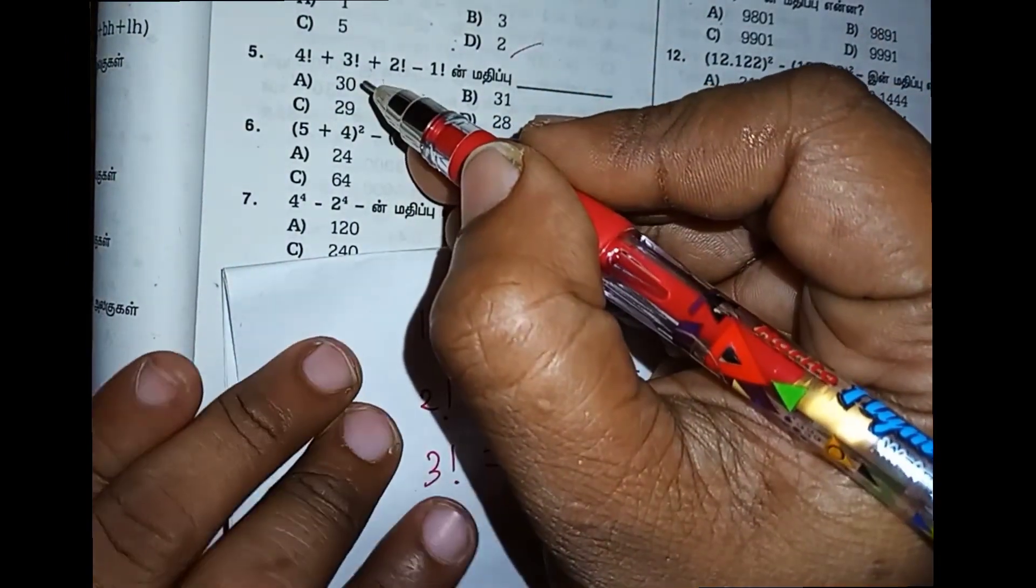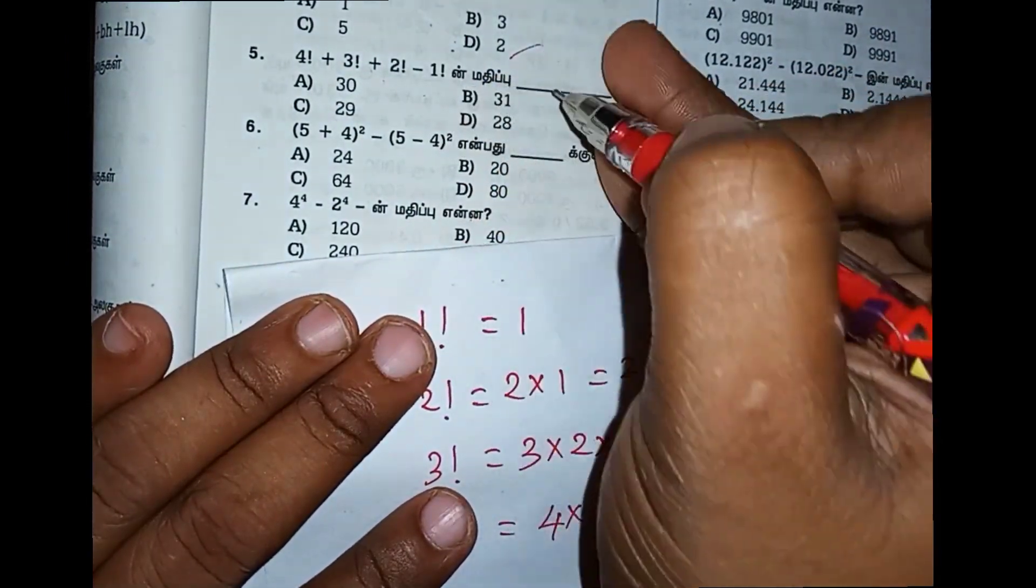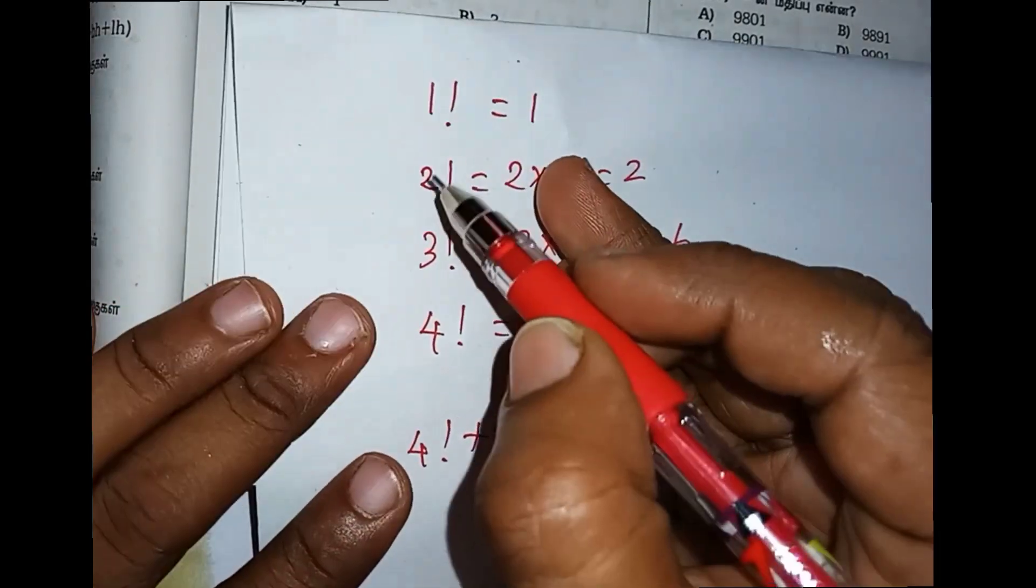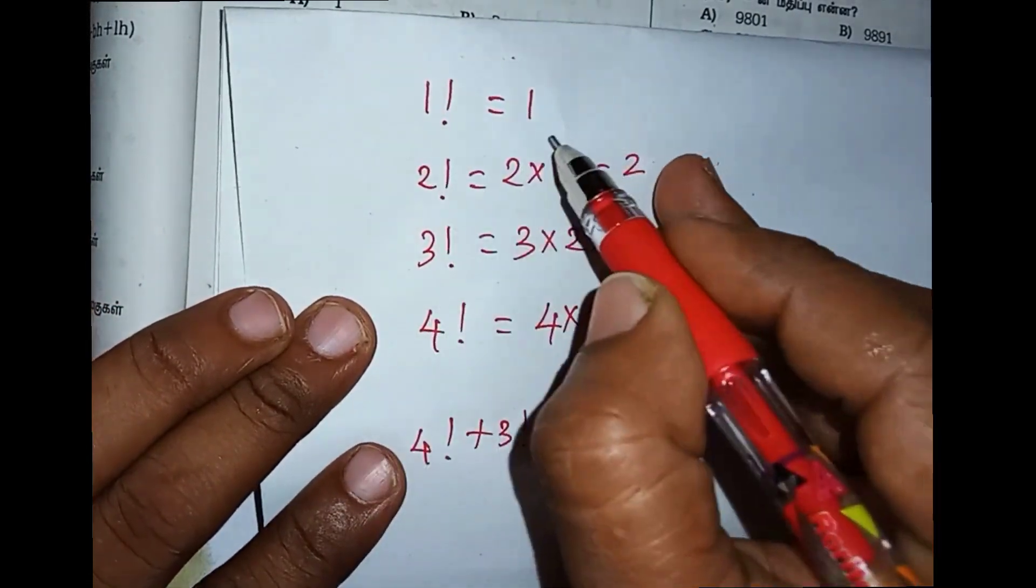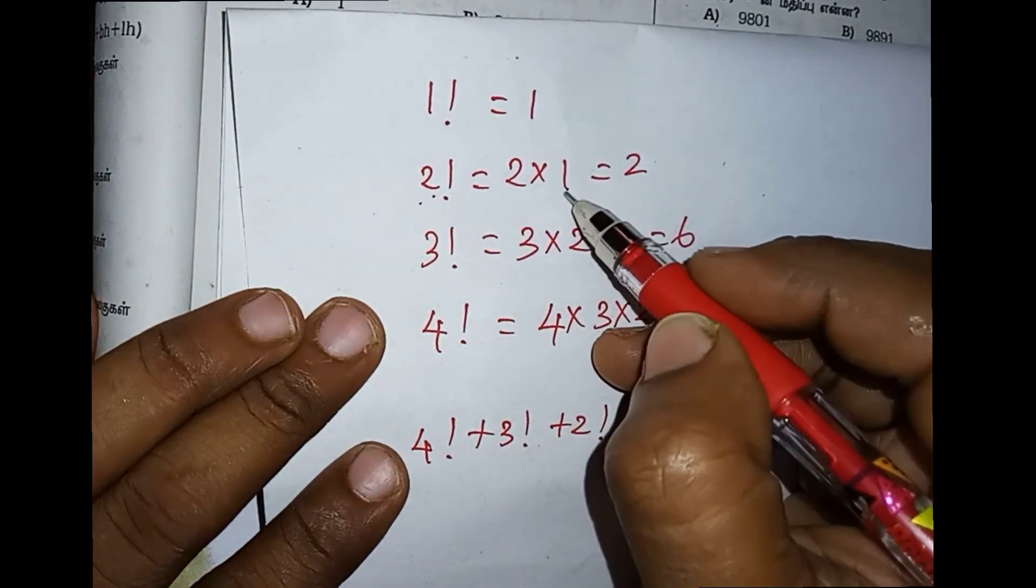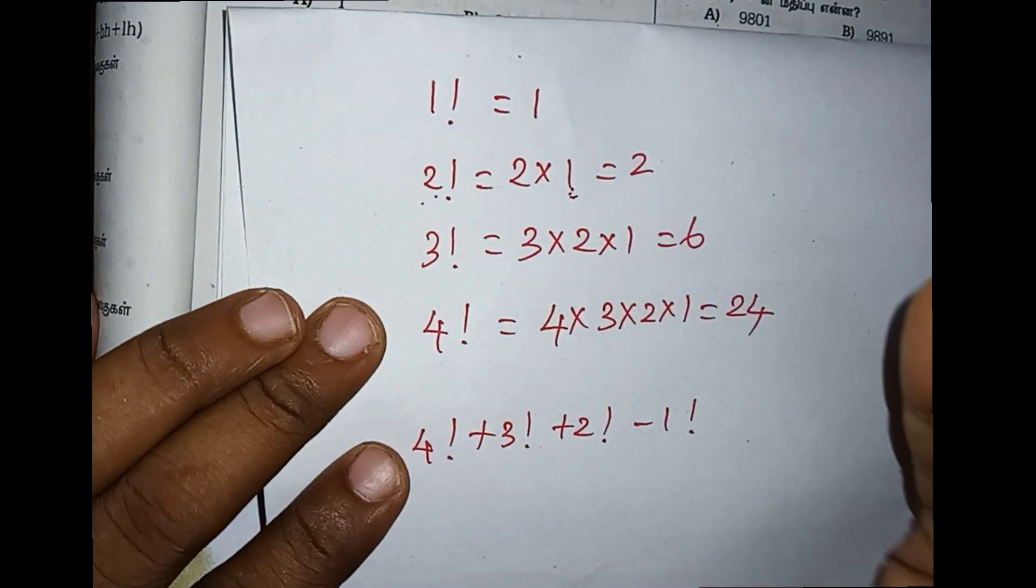What do we find? 4 factorial plus 3 factorial plus 2 factorial minus 1 factorial. In the factorial, we have 1 factorial value is 1. 2 factorial value, we reduce the number and multiply 1 by 2.